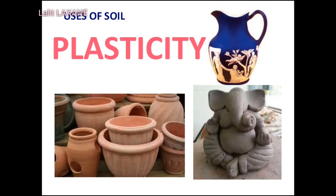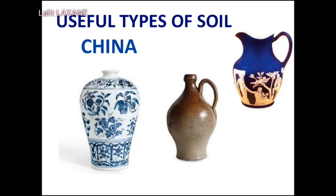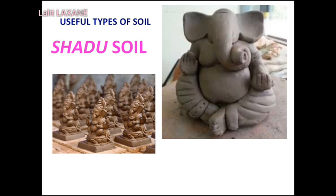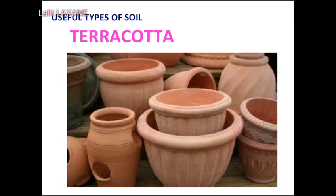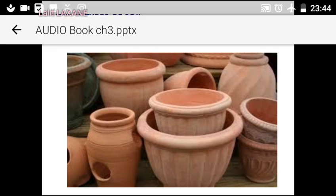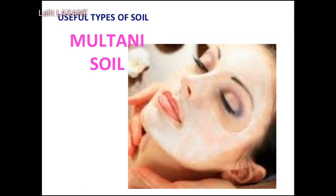Uses of soil: Soil helps plants to grow. Soil holds water, and by means of bunds and lakes we can get water for use throughout the year. Plasticity: Soil can be given any required shape. Because of its plasticity, we can use it to make articles of a variety of shapes, which can then be baked to make them hard. Types of useful soil include: china clay (kaolin) — white in color, used to make crockery, bathroom tiles, tanks, and laboratory apparatus; shadow soil — whitish in color, used for making statues and idols; terracotta soil — red in color, used for decorative articles and plant pots; Multani soil — used in cosmetics.